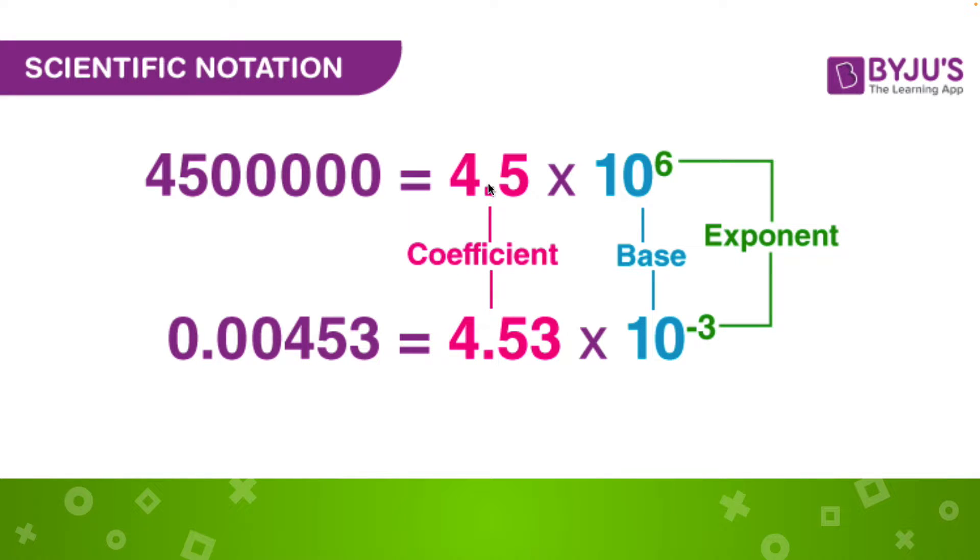We always have it times a base of 10, and the exponent actually tells us is it a big number or a small number. If it's a positive exponent, it's a large number. If it's a negative exponent, it's a small number. So it tells us it's a decimal or it's not a decimal. That's what the exponent lets us know.